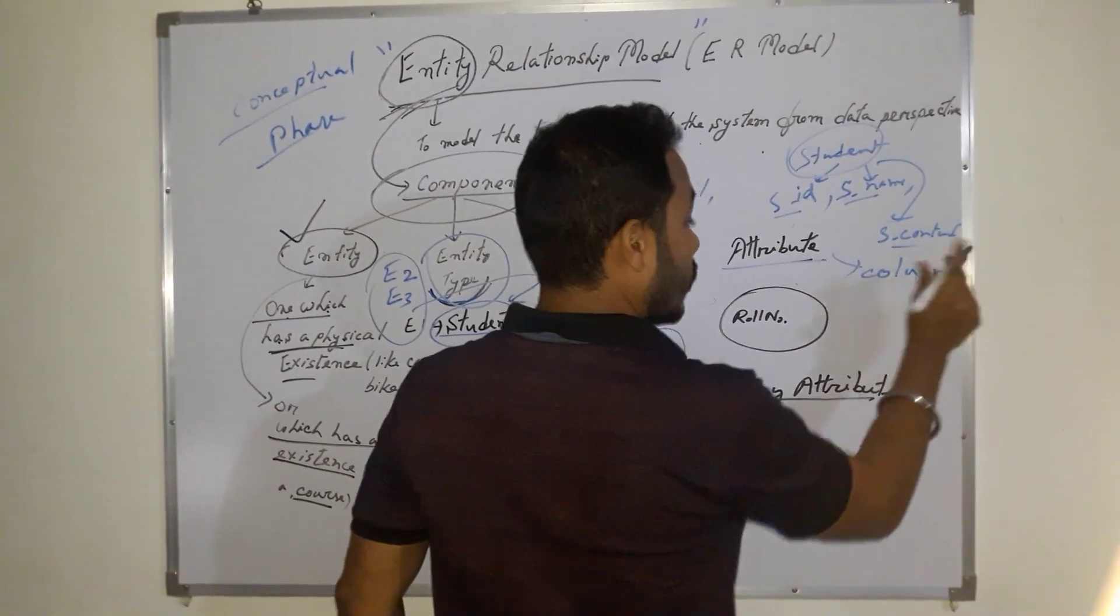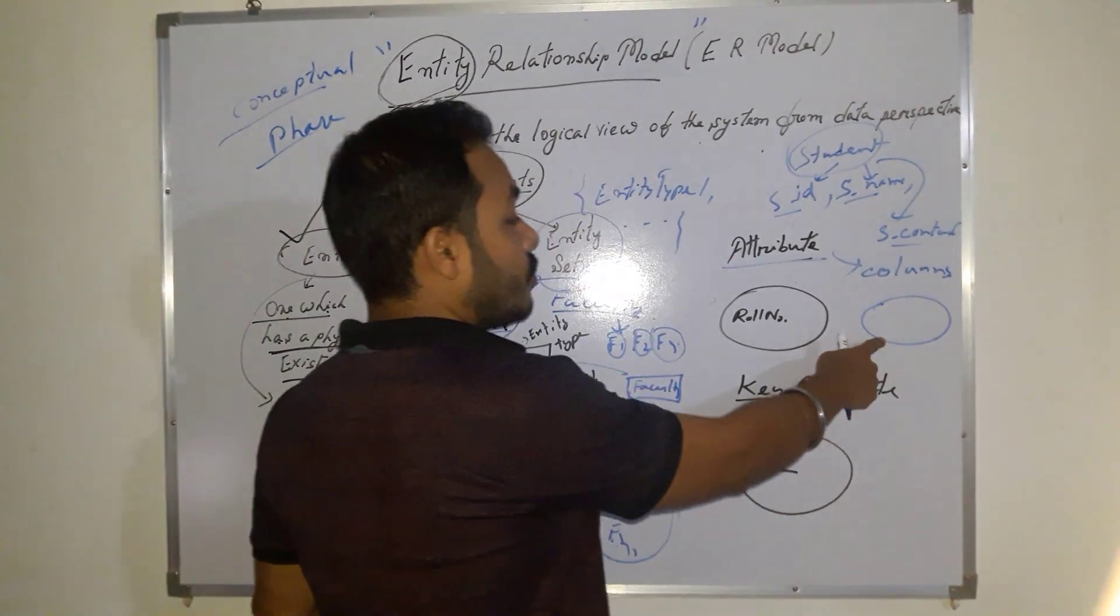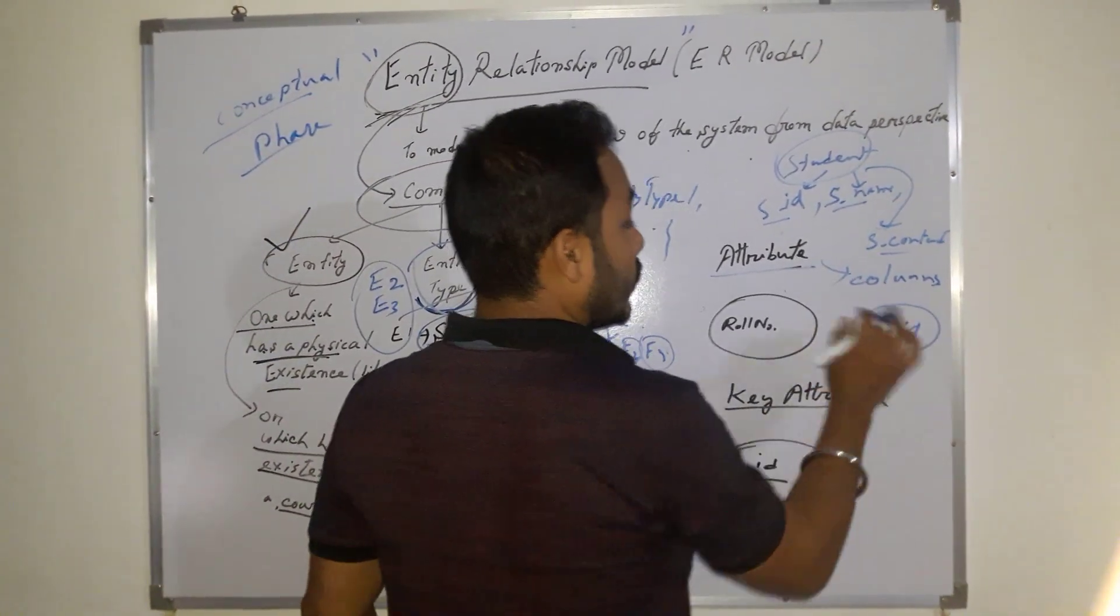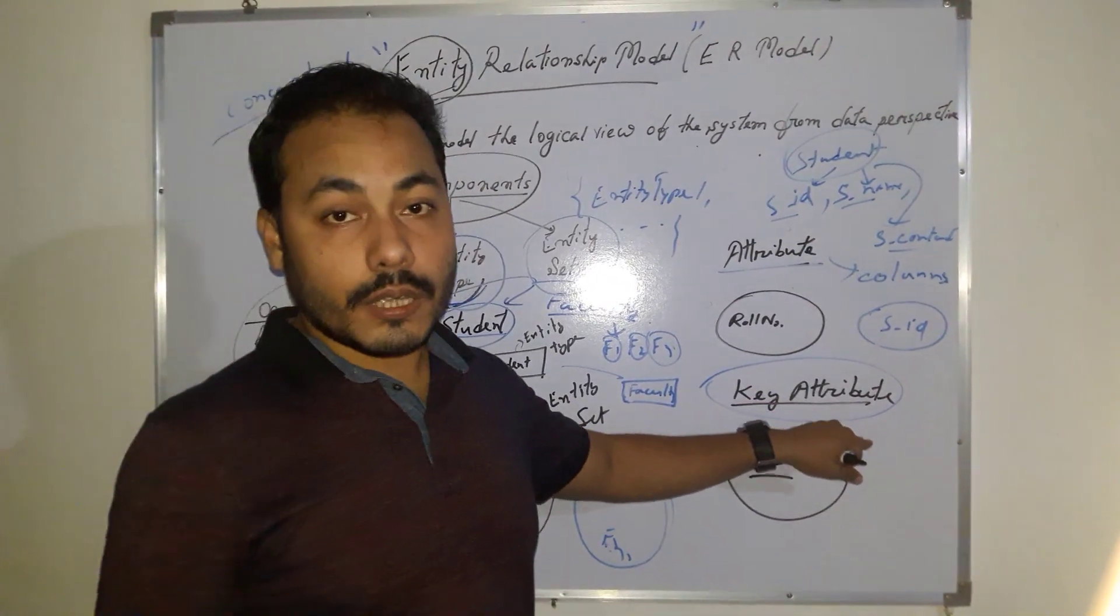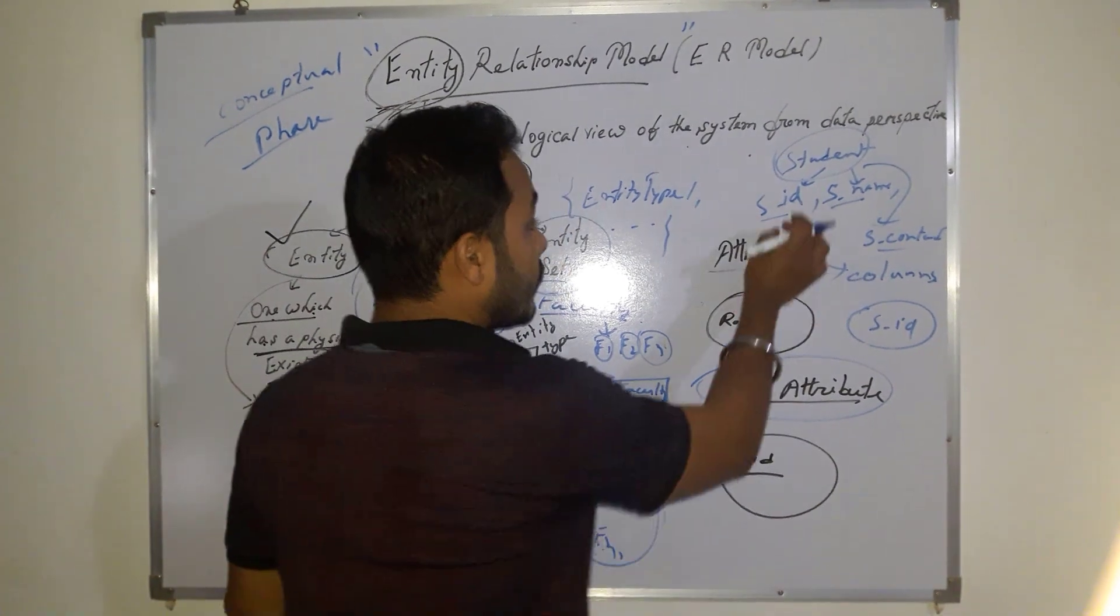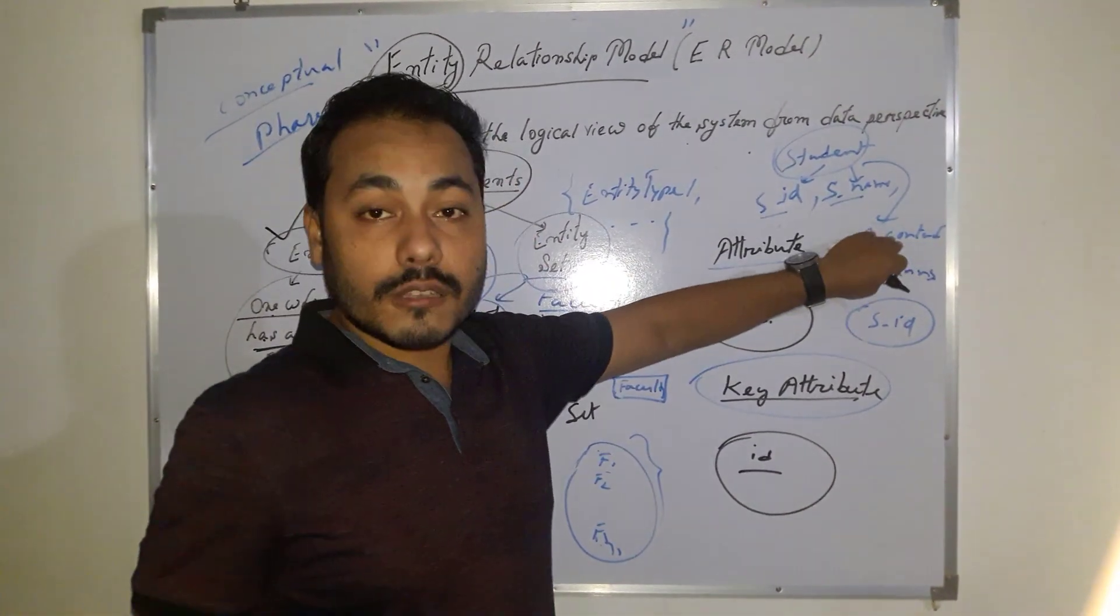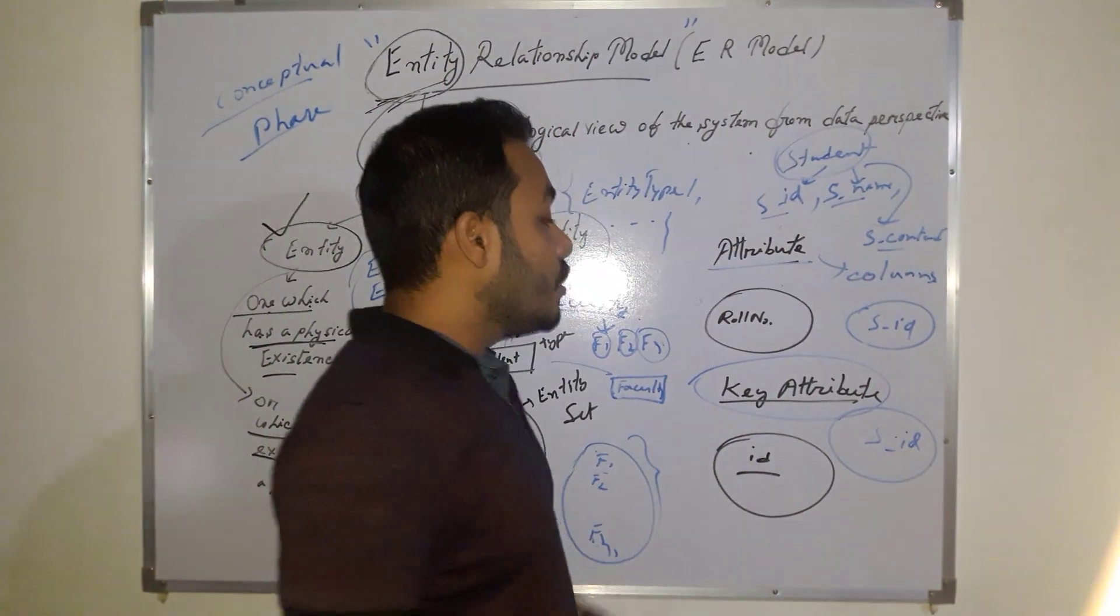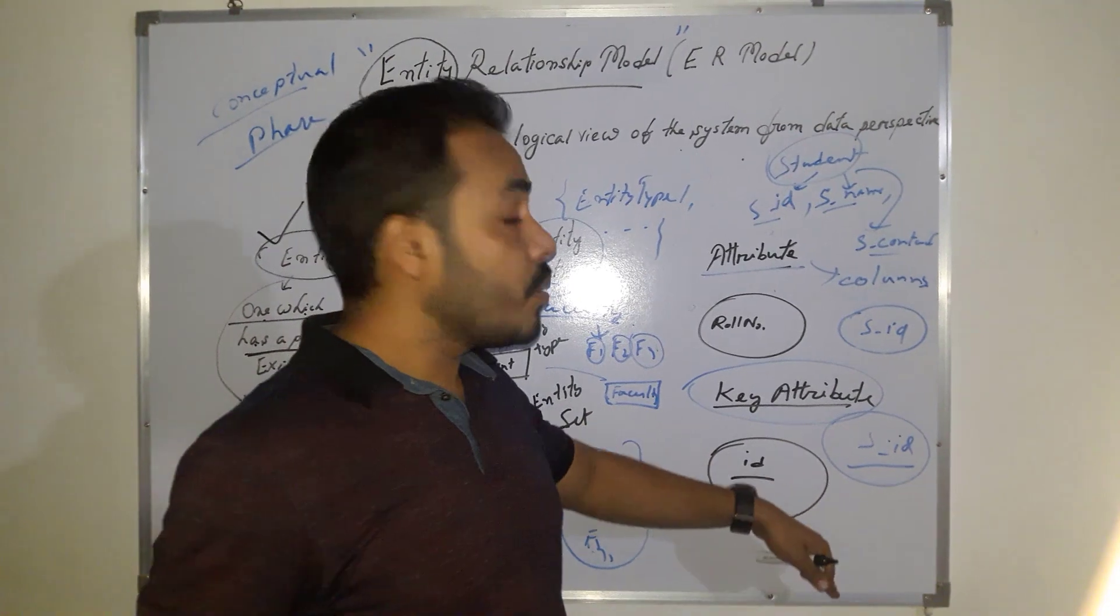Clear? So attribute is represented like this - an oval. This oval is used to denote attribute. Just note down this. This is very important. Like suppose s_id - this will be an attribute. From the attribute, one important classification is key attribute. Key attribute means that attribute which can uniquely identify the other property values. Like in this case, if you know the ID, say s_id, then you can easily retrieve the value for s_name, value for s_contact, isn't it? So s_id will be our key attribute. But do remember that if we are going to denote a key attribute, we need to make it underlined. Now this is a key attribute.